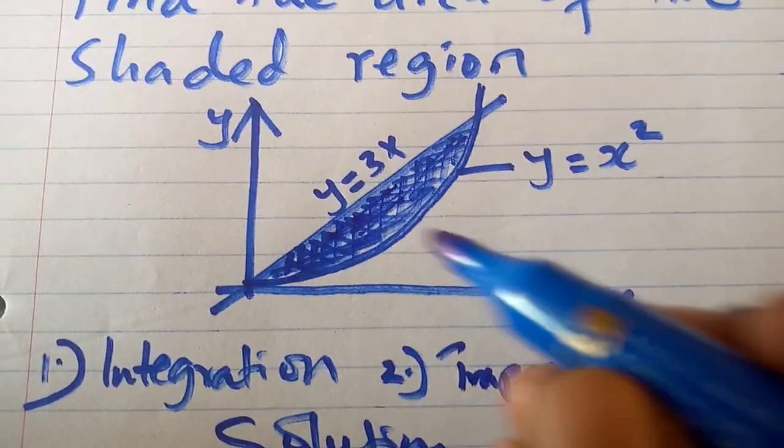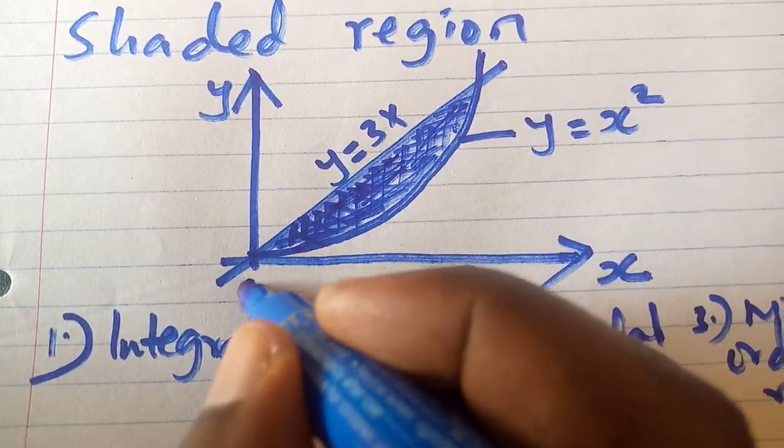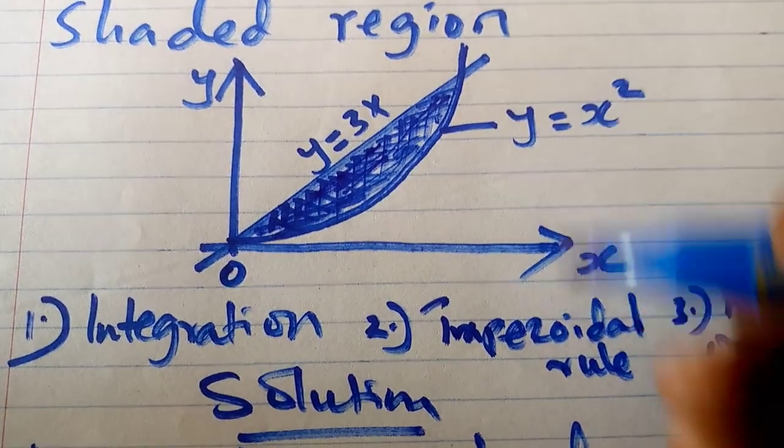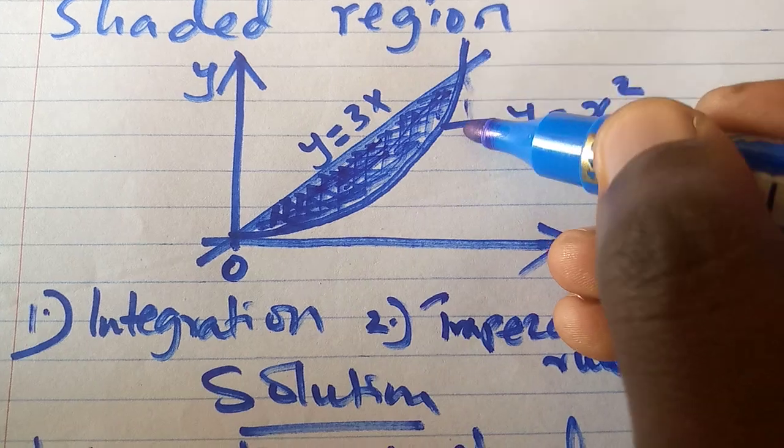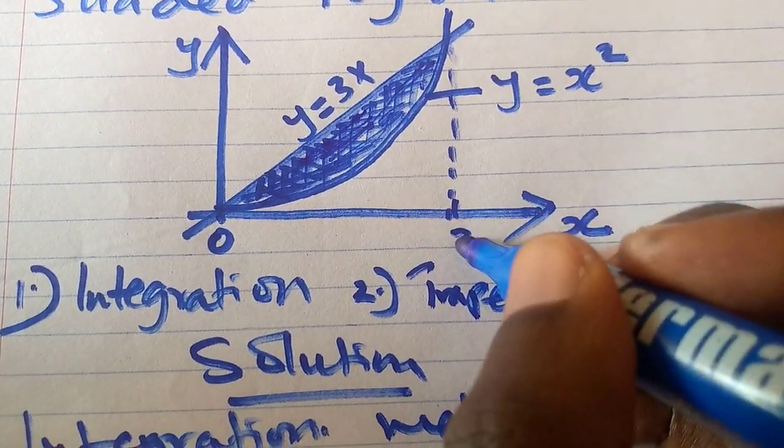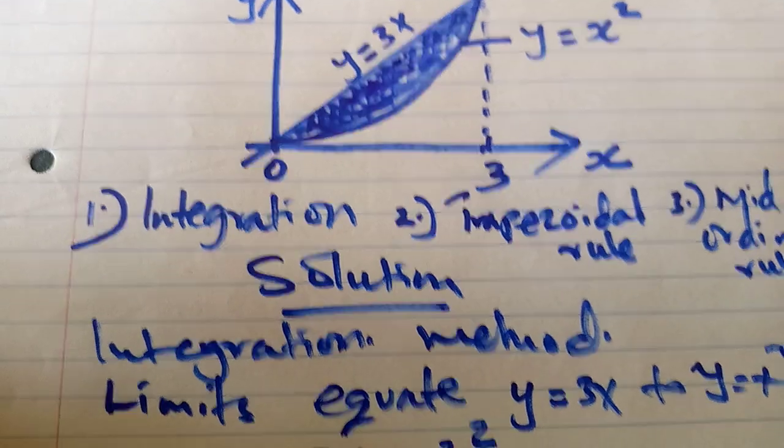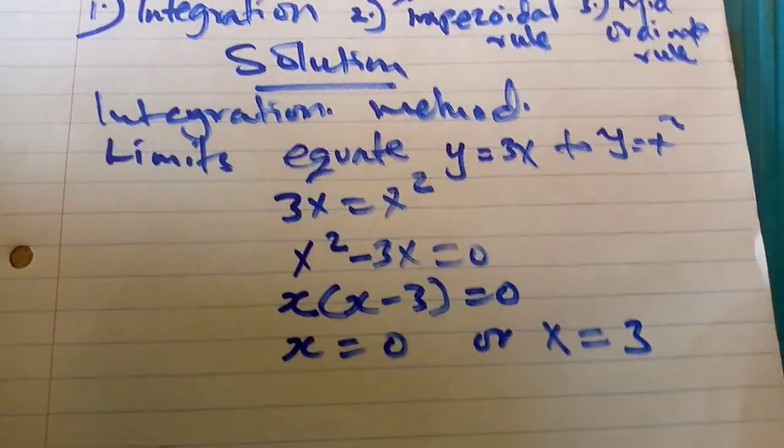So when I come to my diagram here, on the y-axis, the value of x is 0, and 3 means that the farthest end where they are meeting, the value of x there is 3.